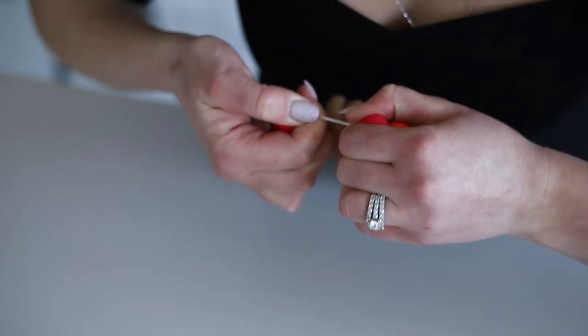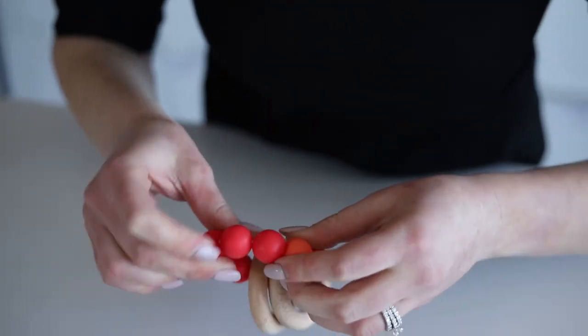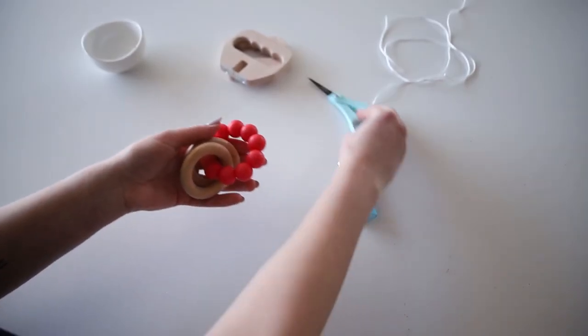Pull one of the beads over the knot to hide it. And just like that your teether toy is completed and ready for your little one to enjoy.